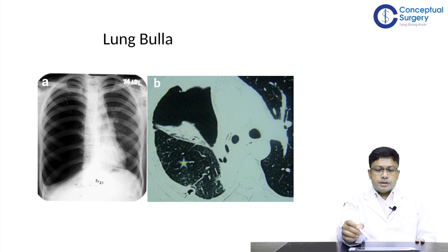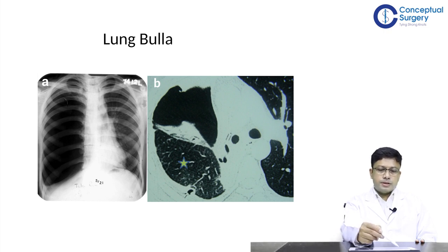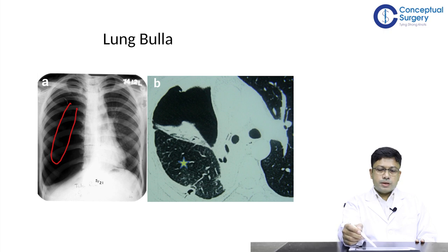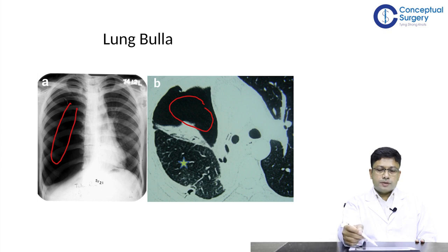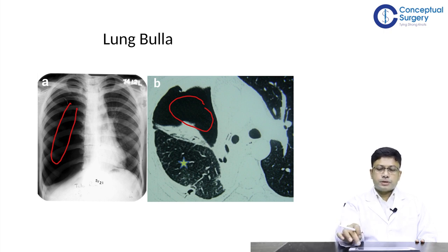If anyone is in doubt about the presence of pneumothorax, further higher imaging studies should be carried out. For example, figure A shows a translucent area devoid of vascular markings, but a CT chest of the same patient showed a huge bulla on the right side. In this case a chest tube is not indicated. If the chest tube is placed inadvertently into the bulla, this can lead to a bronchopleural fistula with continuous air leak through the chest tube.